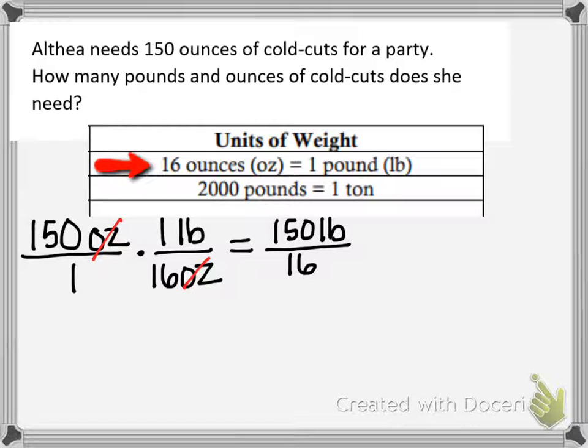And all I did there was multiply my numerators and multiply my denominators. Now I have the improper fraction 150 over 16. So I know that 16 goes into 150 nine times evenly, and 9 times 16 is 144.